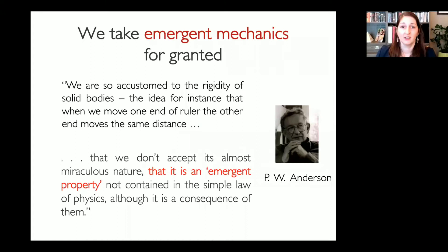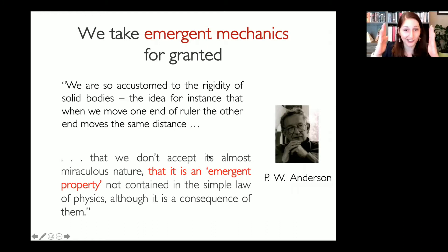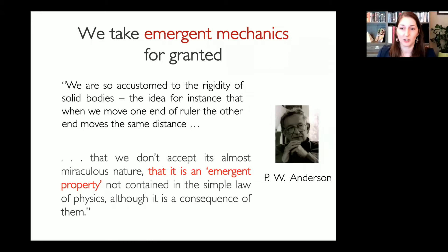I'd like to take a step back because emergent mechanics is surprising and we take it for granted. I like this quote by Phil Anderson: you take a ruler, push one end, and the other end moves the right amount so it's rigid — but why? It is an emergent property not contained in any simple law of physics, although it is a consequence of that.